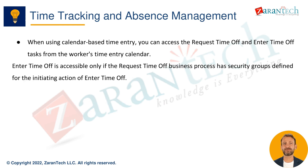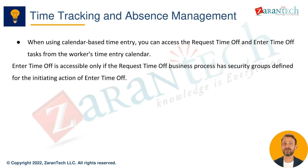There are three options for entering time off. Through time tracking only: select the time off and time type when entering time; time off and work time is submitted together; uses the enter time business process for approval; reduces the balance after approval and updates pending balance when saved. Through absence management only: use request time off or enter time off tasks; uses the request time off business process for approval; reduces the balance after approval; doesn't update pending balance when saved.